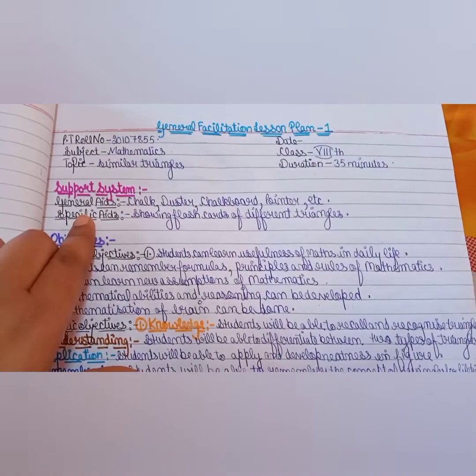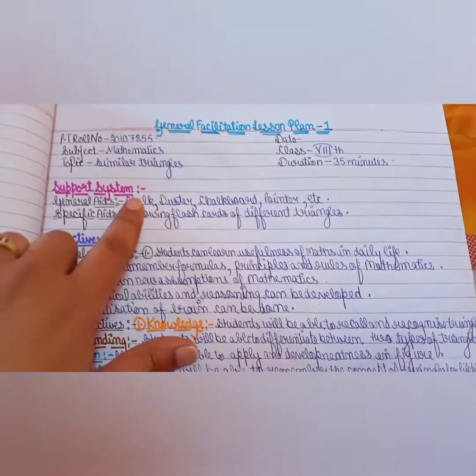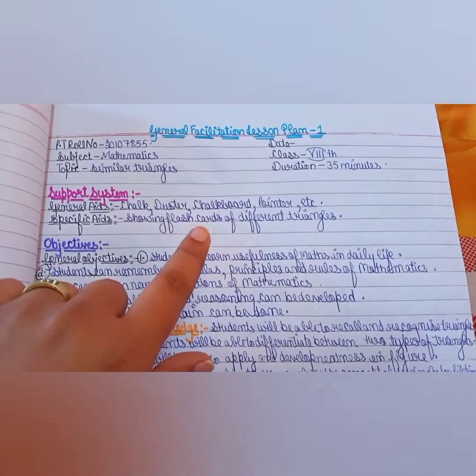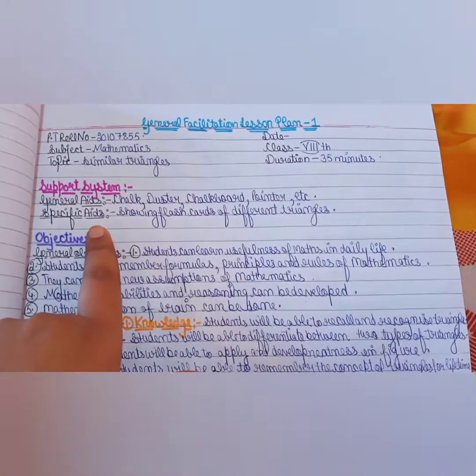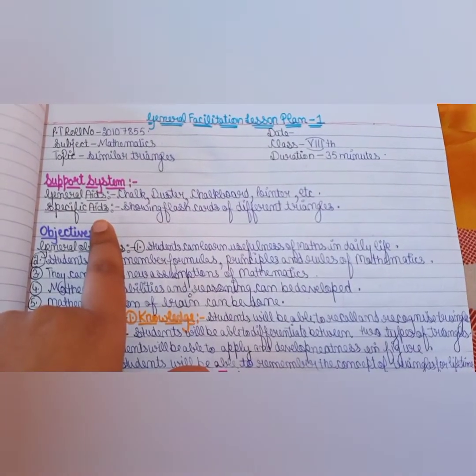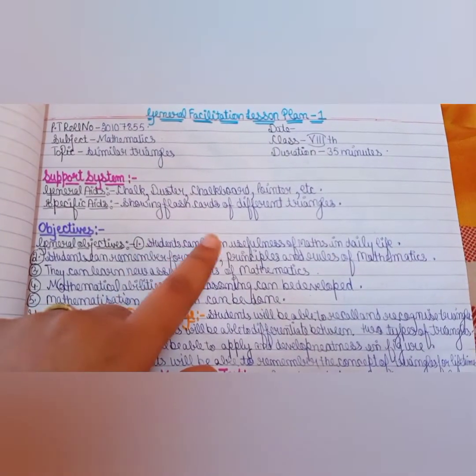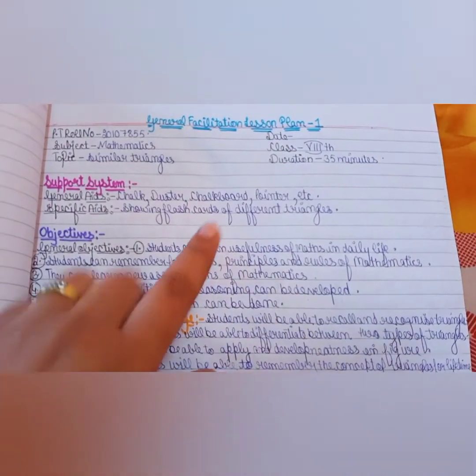General Aids are the ones that we generally use normally, such as chalk, duster, chalkboard, pointer, etc. Specific Aids are the ones that are using PT, so that the children can understand. Using flashcards, different triangles, and just on the blackboard.